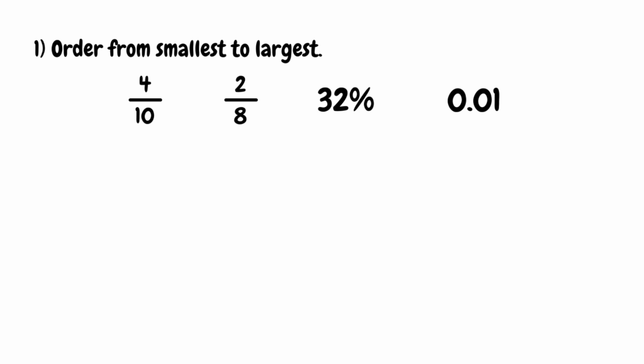For this first question, we want to order 4 tenths, 2 eighths, 32%, and 0.01 from smallest to largest. We're going to convert all of these into a percentage. Fortunately, 32% can stay as it is because it's already a percentage.